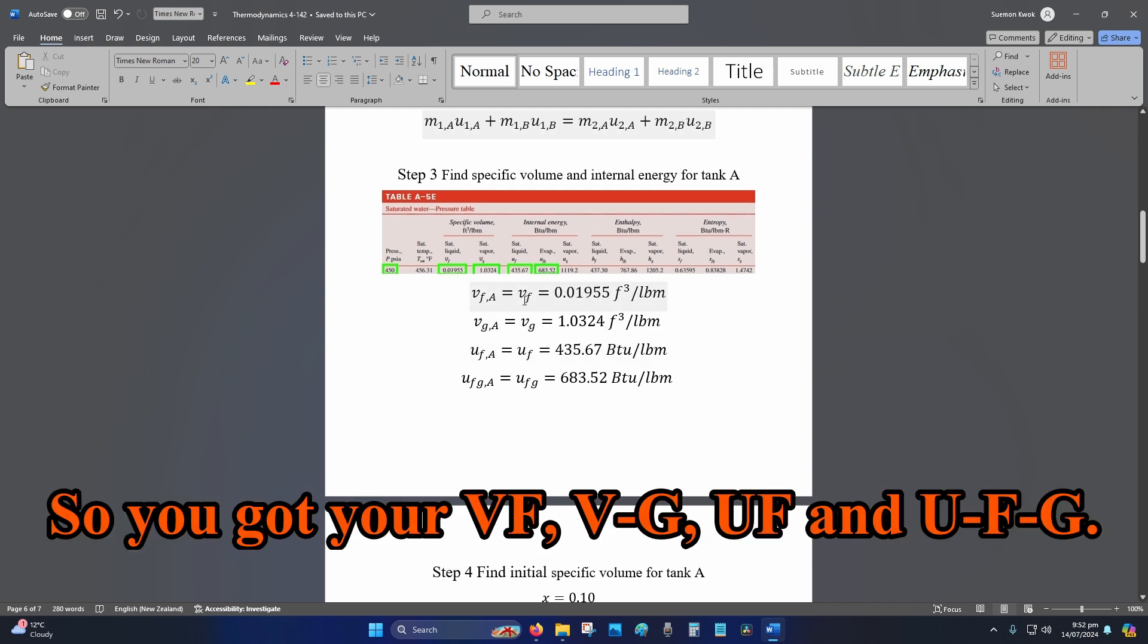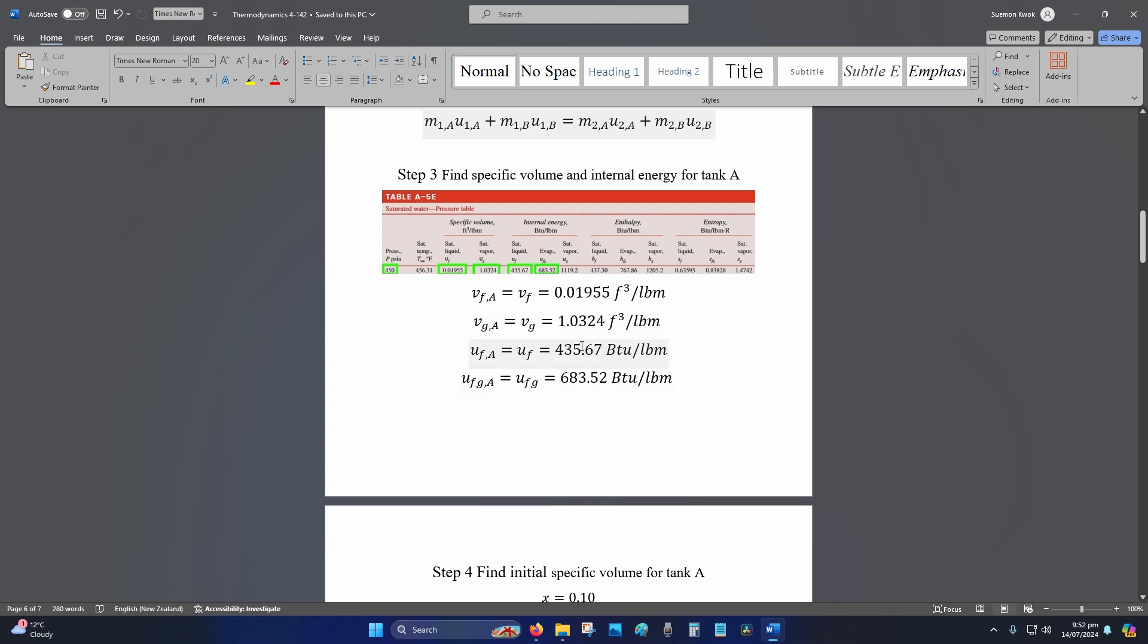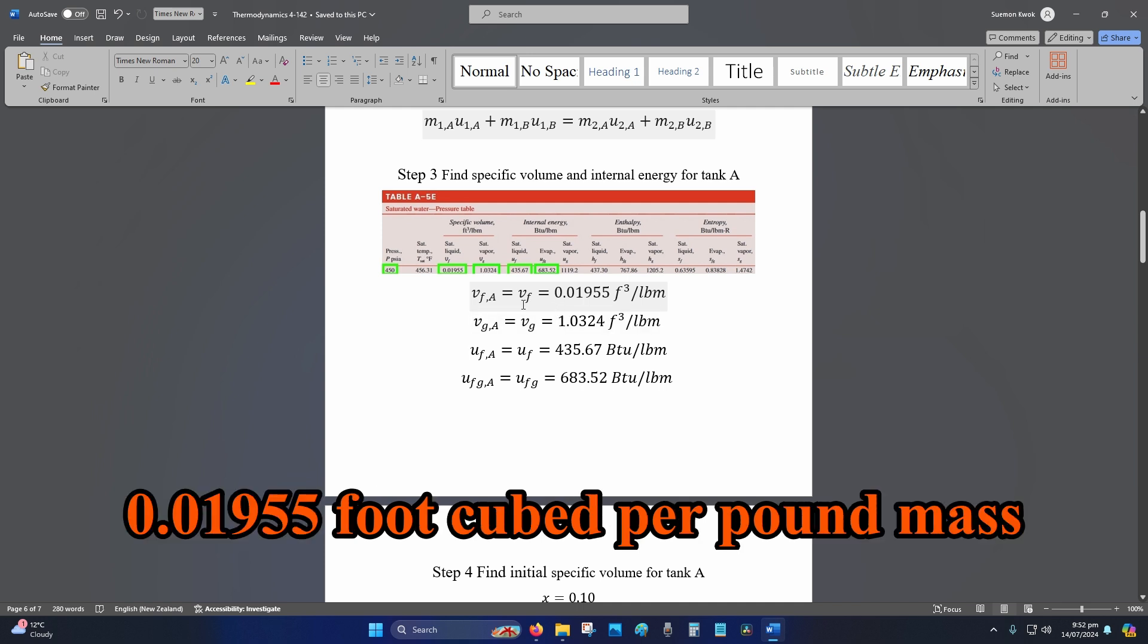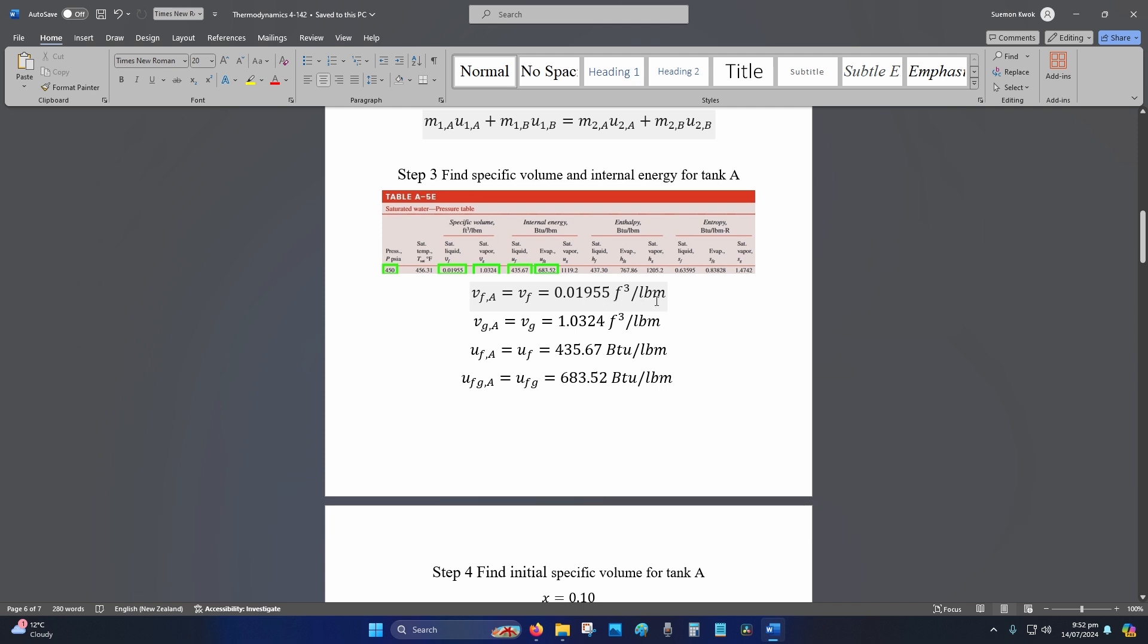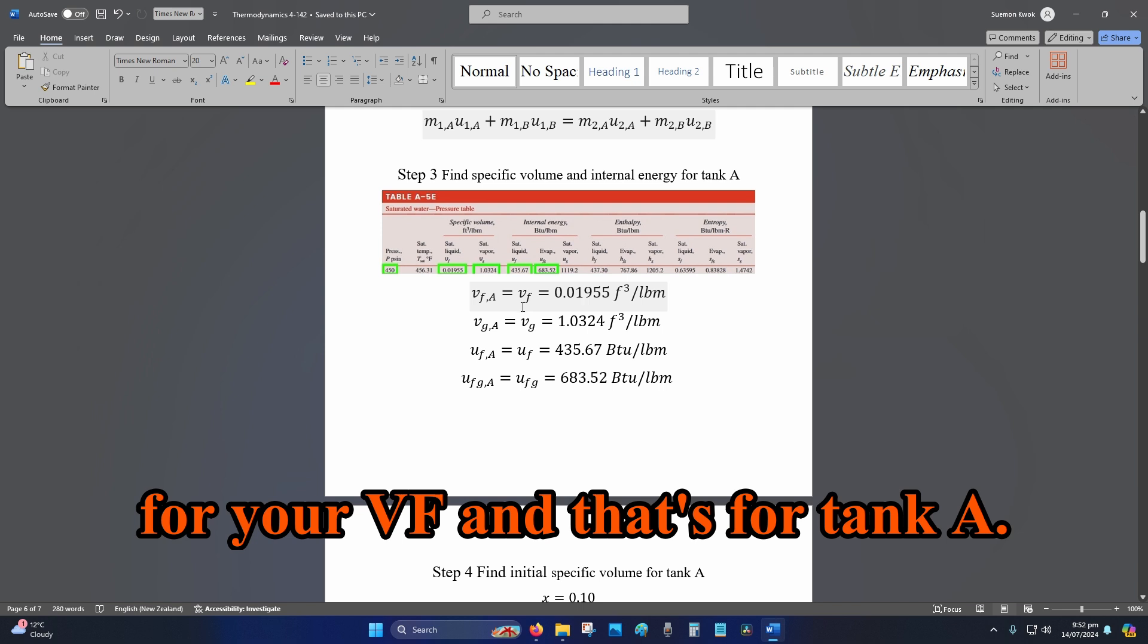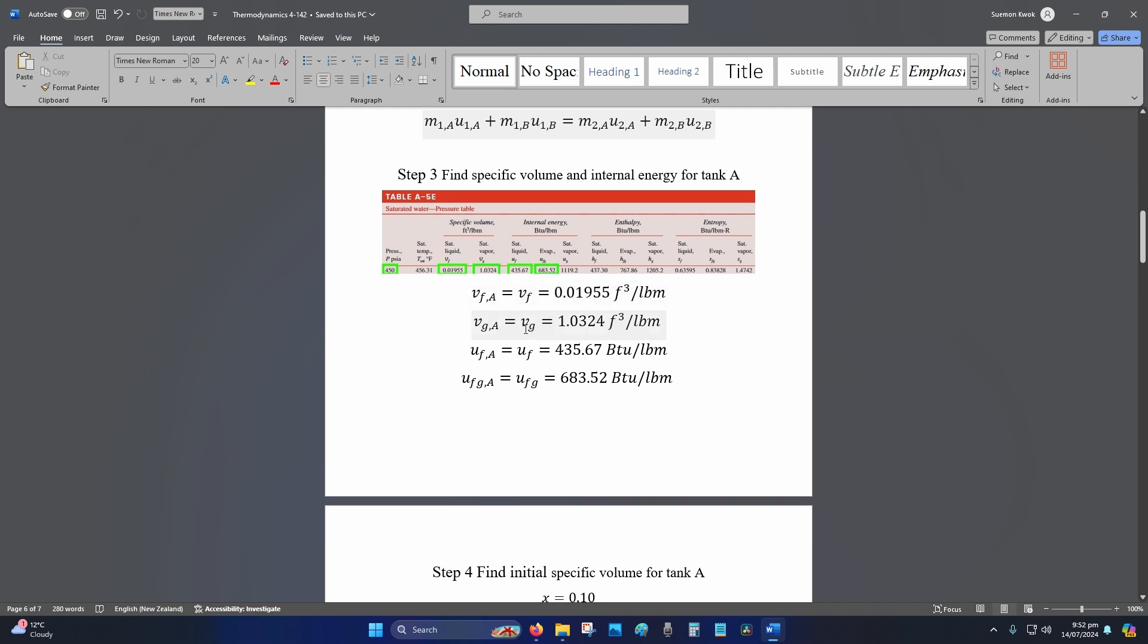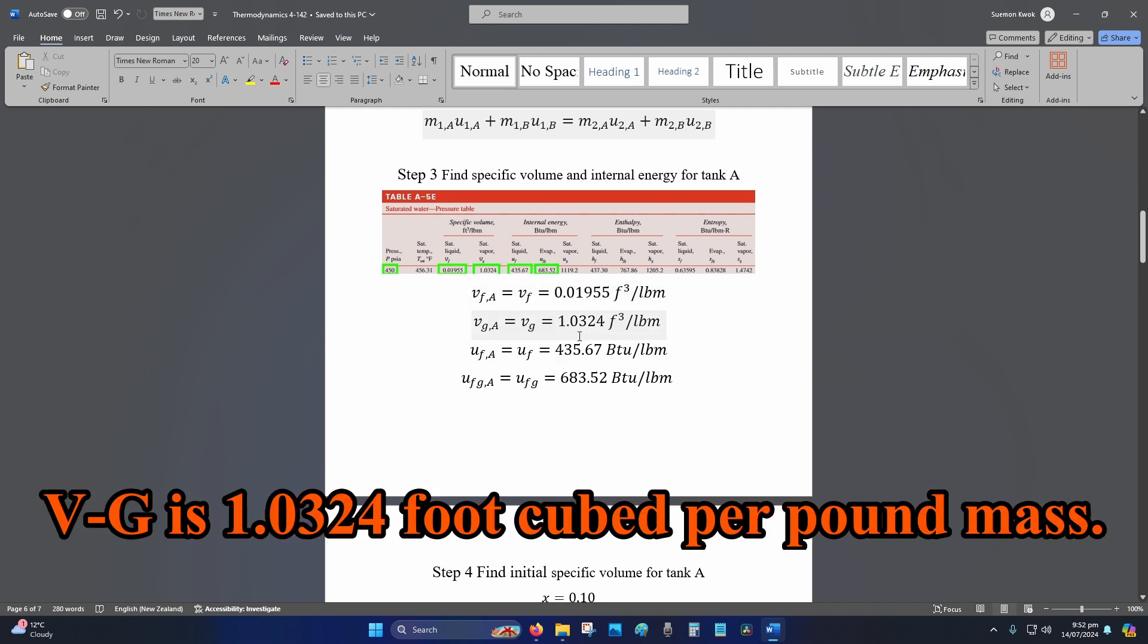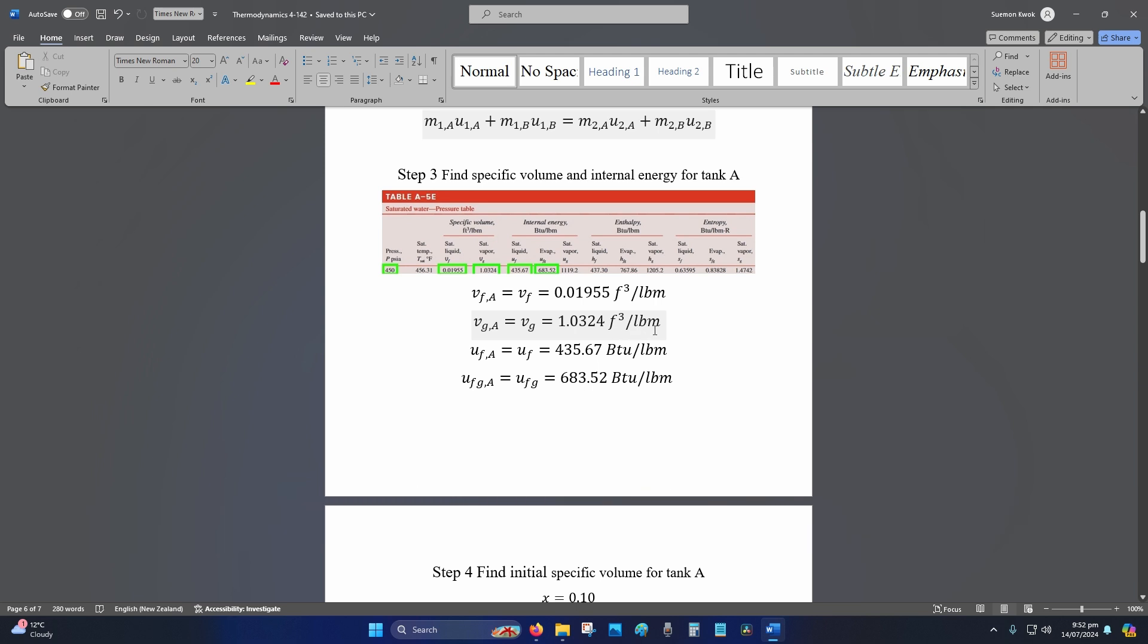So, you've got your VF, VG, UF, and UFG. So, that is equal to 0.01955 foot cubed per pound mass for your VF, and that's for tank A. VG is 1.0324 foot cubed per pound mass.